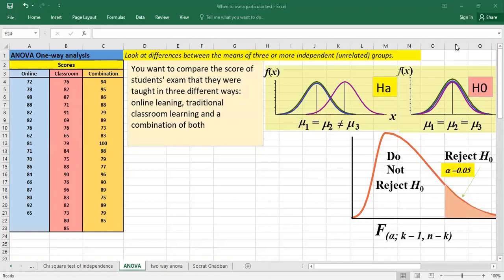The one-way analysis of variance ANOVA is used to determine whether there are any statistically significant differences between the means of three or more independent groups. It's an extension of the two-sample hypothesis testing for comparing means to more than two samples.